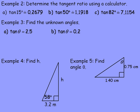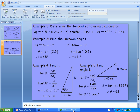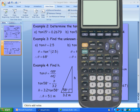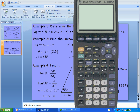In example 3, instead of finding the tangent ratio from a known angle, we're given the tangent ratio and need to find the angle. In part 3A, the tan of some unknown angle is 2.5. On a scientific calculator there's an inverse tan function, written as tan to the power of negative 1. Using inverse tan of 2.5, the calculator gives theta equals 68 degrees.